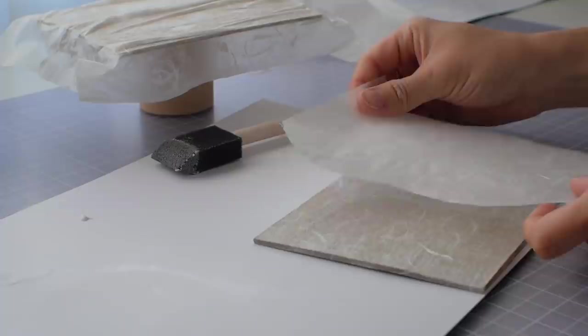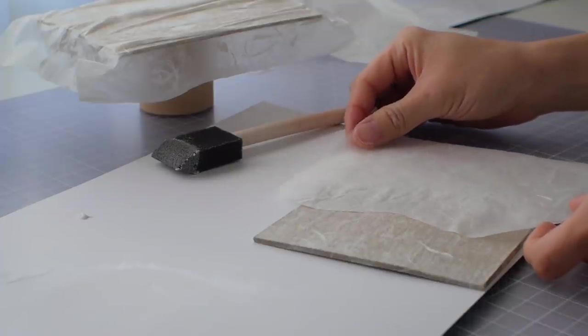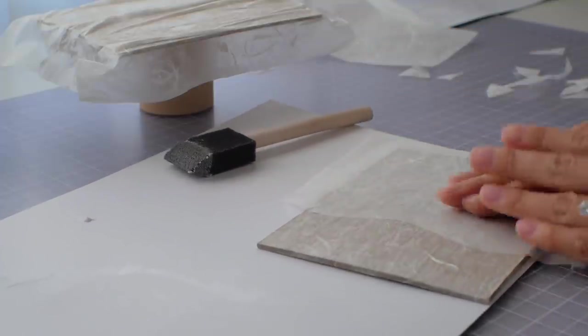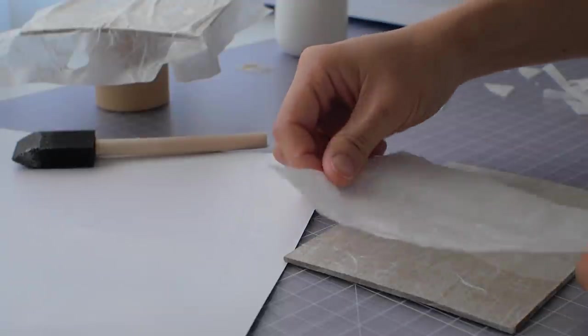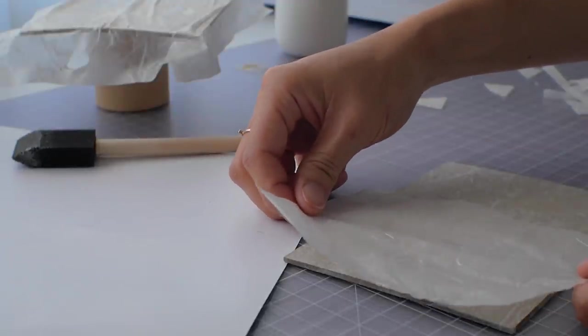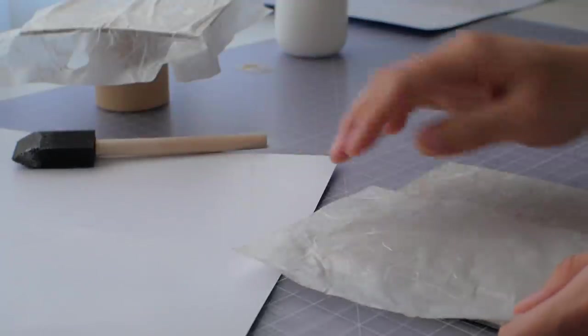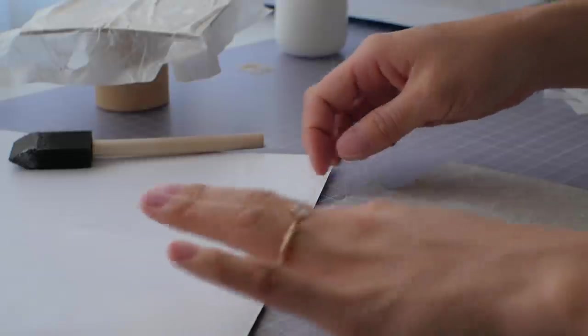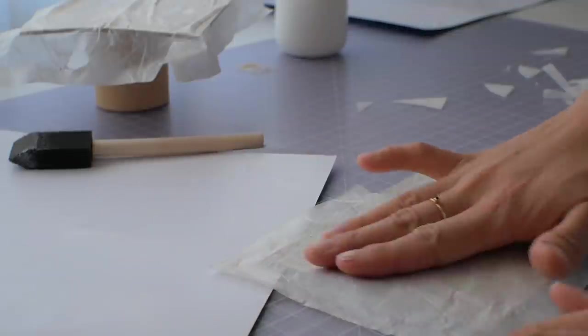While the first layer dried, I went ahead and covered the back cover. I decided to cut a loose waveform and then glued a couple layers onto the back cover. I kind of wish I teared the paper instead because it ended up looking a little unnatural.